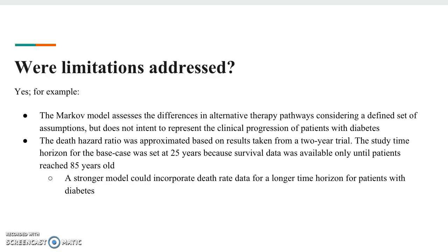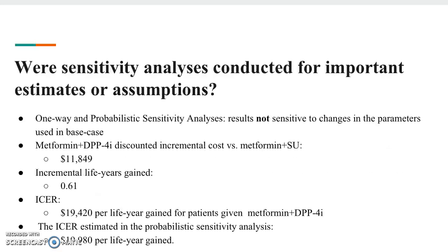Limitations were also addressed in the study, including that the Markov model assesses differences in alternative therapy pathways considering a defined set of assumptions but does not intend to represent the clinical progression of patients with diabetes. Also, the death hazard ratio was approximated based on results from a two-year trial. The study time horizon was set at 25 years because survival data was available only until patients reached 85 years old. A stronger model could incorporate death rate data for a longer time horizon for patients with diabetes.